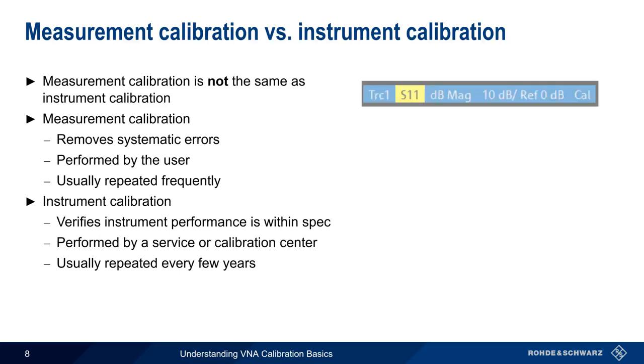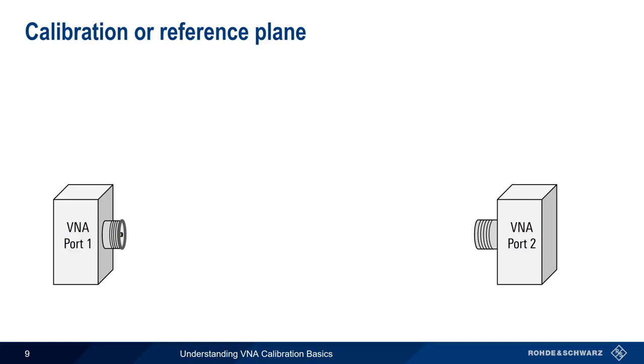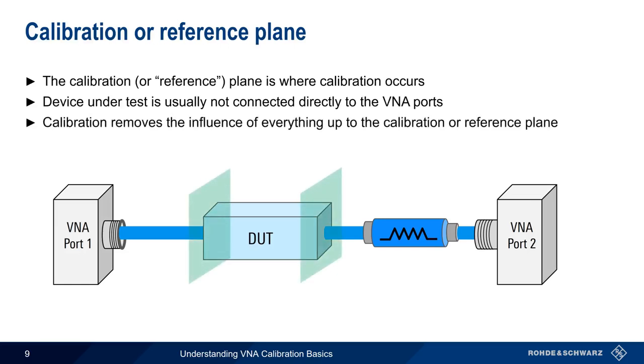A VNA has a valid measurement calibration when it displays cal or similar somewhere on the GUI. A VNA has a valid instrument calibration when its calibration stickers are intact and the instrument has been in for a cal sometime during the last few years. Another important concept in calibration is a calibration plane or reference plane, which is where calibration occurs. In most cases, the device under test is not directly connected to the VNA ports. In addition to cables, other devices such as attenuators may be between the DUT ports and the VNA ports. By defining our calibration or reference planes where the DUT will be attached, the influence of everything between the DUT and the analyzer ports will be removed or calibrated out.